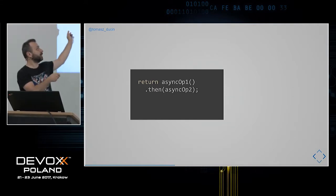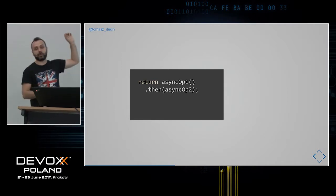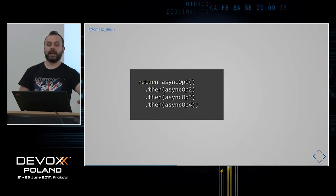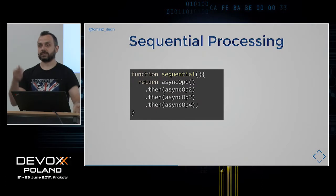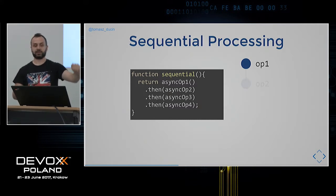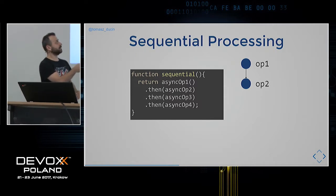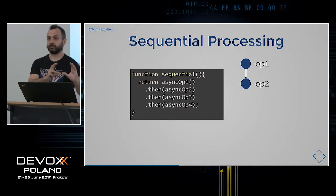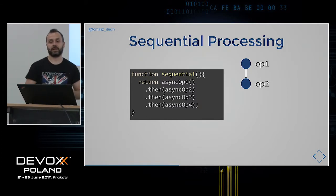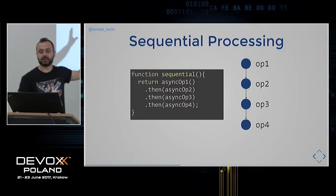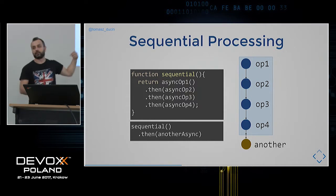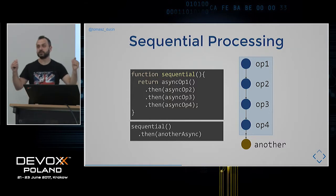In a promise chain, the result of operation one becomes input for operation two, output of operation two becomes input for operation three — sequential processing. When operation one is pending we wait; once done, async operation two is invoked, each function becoming a message on the queue. We can wrap chains in reusable functions, use them with or without parameters, and create application layers — for example, a repository pattern to communicate with a REST API.